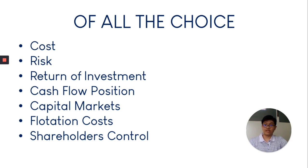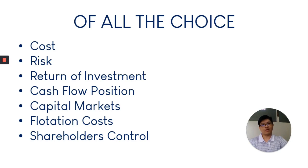Number two is the risk. There's always a risk, especially in debt. We have to weigh out the risk and assess if we have the capacity to outweigh it — if we are confident that we can pay the debt. This is especially true for a sole proprietorship, where going bankrupt gives creditors the right to take all of your personal properties. Whereas if you're a corporation, they could only take the properties of the corporation.